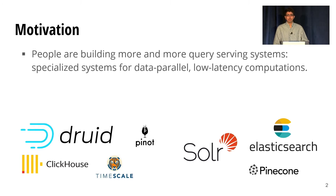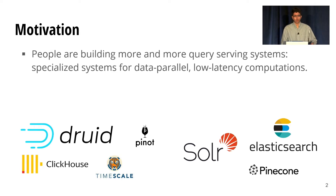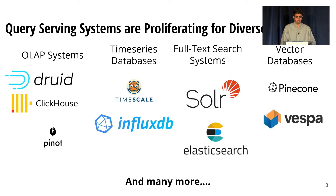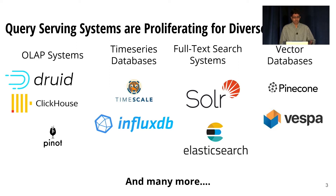The observation that motivated this work is that people are building more and more of what we call query serving systems — specialized systems for data parallel, low latency computations. There are a lot of these, and they're proliferating for some very diverse workloads. The class of query serving systems includes OLAP systems like Druid, ClickHouse, and Pinot, time series databases like Timescale and Influx, text search systems, vector databases, and many other types of systems.